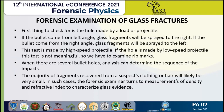In forensic examination of glass fracture, if all the glass pieces are present, the first thing to check is the hole made by the projectile. If the bullet came at an acute angle from the left, glass fragments will be sprayed to the right and the resulting hole will be an irregular oval. This test works best when the hole is made by a high-speed projectile; if made by a low-speed projectile, this test is not meaningful, and rib marks must be examined instead. When there are several bullet holes, analysis can determine the sequence of impacts. The majority of fragments recovered from suspect clothing or hair will likely be very small, so the forensic examiner turns to measurement of density and refractive index to characterize the glass evidence.